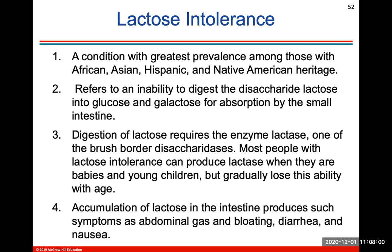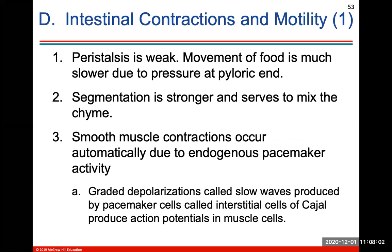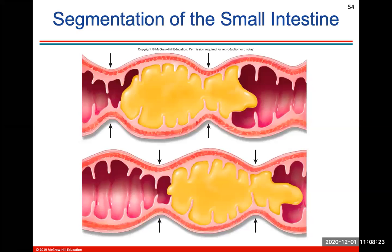Most people with lactose intolerance can produce lactase when they are babies and young children but will gradually lose this ability with age. Regarding intestinal contractions and motility: peristalsis is weak in the intestines, and movement of food is much slower due to pressure at the pyloric end. Segmentation will be stronger and serves to mix the chyme, with smooth muscle contractions occurring automatically to squeeze or push chyme along.